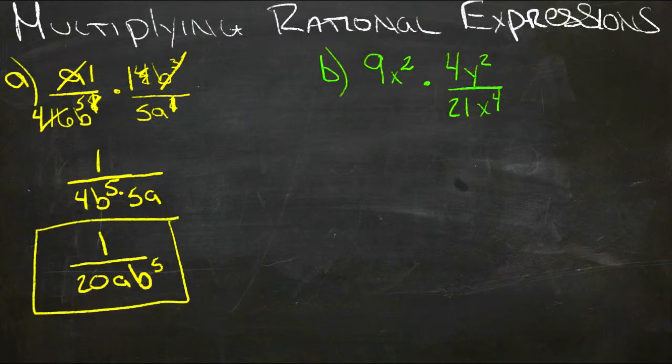For example b, we have 9x squared times 4y squared over 21x to the fourth. So 9 is 3 times 3 and 21 is 7 times 3. So those can cancel and leave a 7.